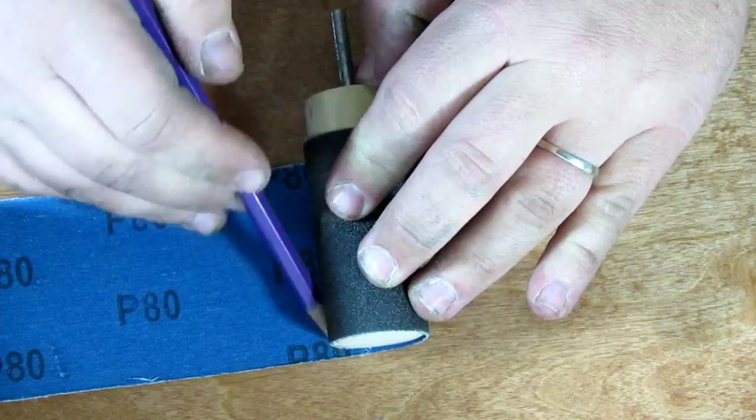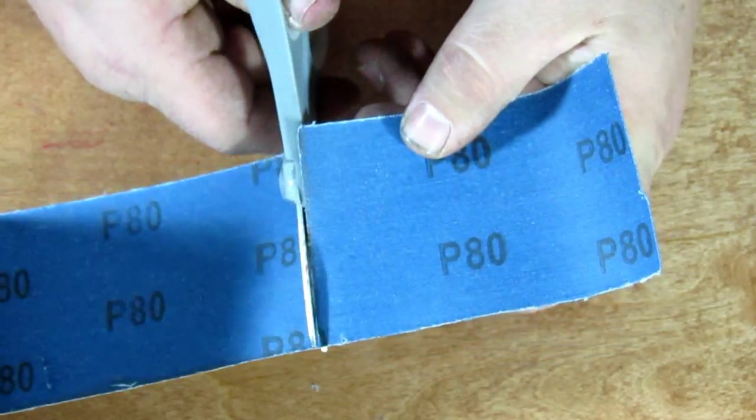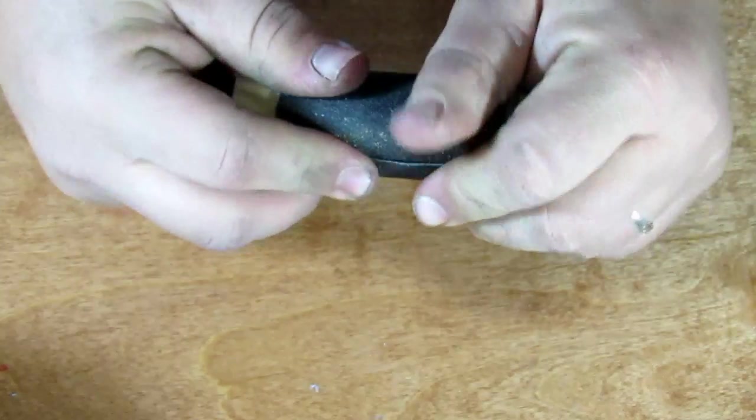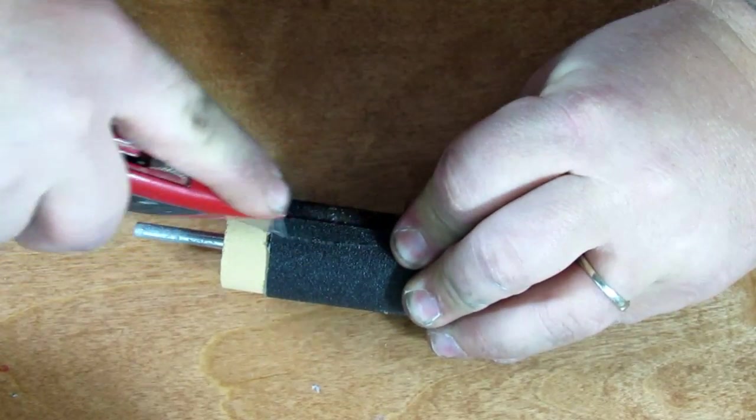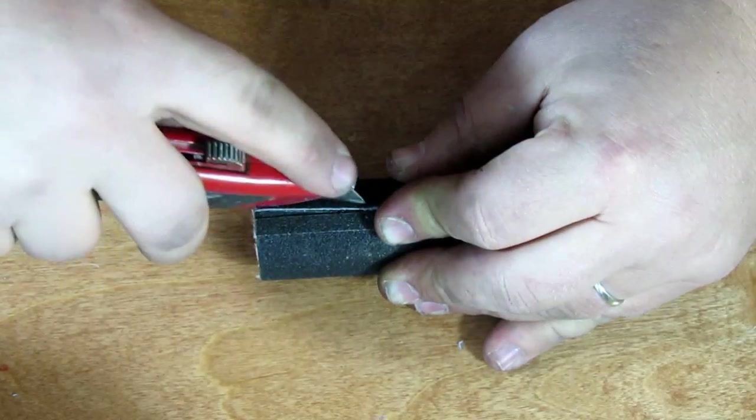With some bargain sandpaper from Harbor Freight, I wrapped the spindle and then cut to size. For the final trimming, I made sure to overlap the two ends and cut down the center through both. That way the two ends would match up with each other.